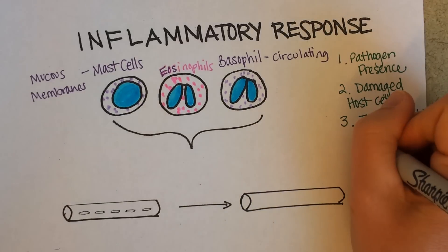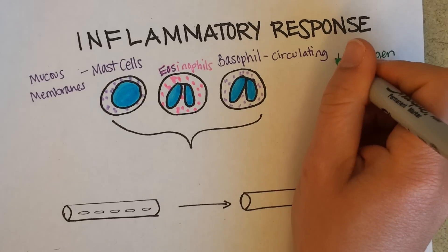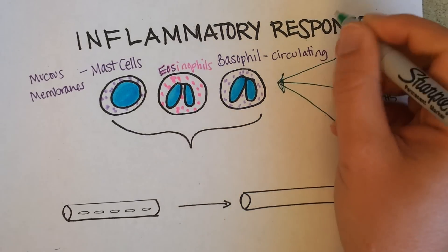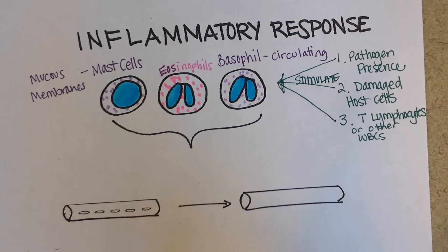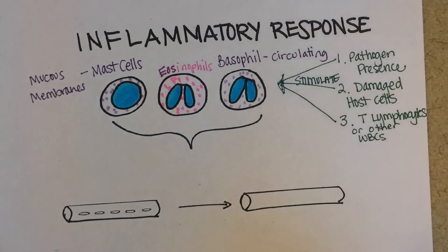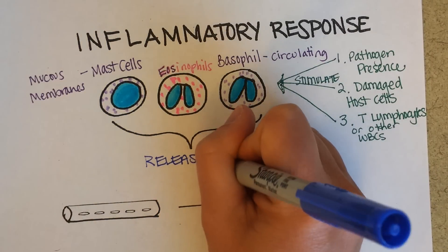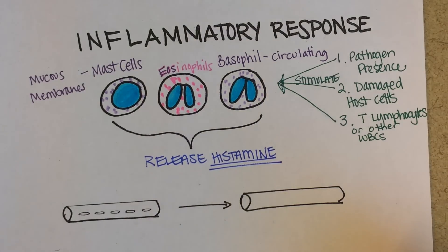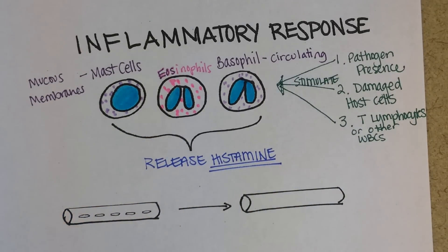T lymphocytes and other white blood cells — all three of these can stimulate these cells. And once these cells are stimulated they release chemicals, and the most key chemical in inflammation is histamine. Most everybody knows that if they are having an allergic reaction they take something like Benadryl, which is an antihistamine. What that drug does is it blocks the effects of histamine.